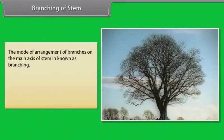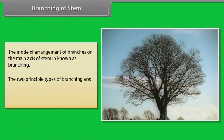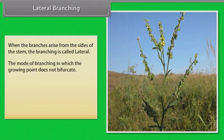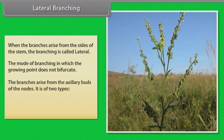The mode of arrangement of branches on the main axis of stem is known as branching. The two principal types of branching are lateral branching and dichotomous. In lateral branching, when the branches arise from the sides of the stem, the growing point does not bifurcate. The branches arise from the axillary buds of the nodes. It is of two types: racimose and cymose.